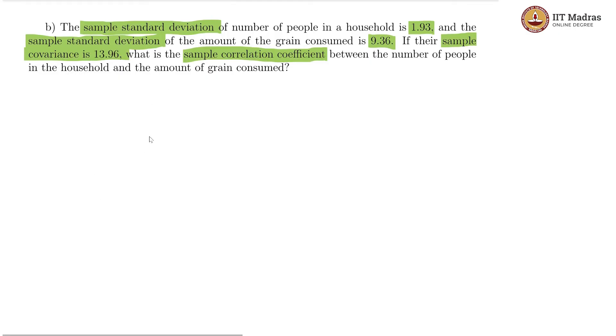We have already seen in the previous problem that sample correlation coefficient is the sample covariance divided by the sample standard deviations product, and that gives us 13.96 divided by 1.93 into 9.36 and this is roughly 0.7728.